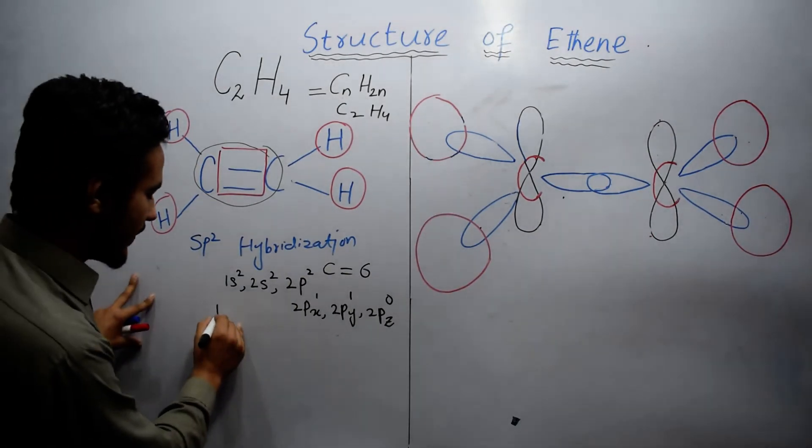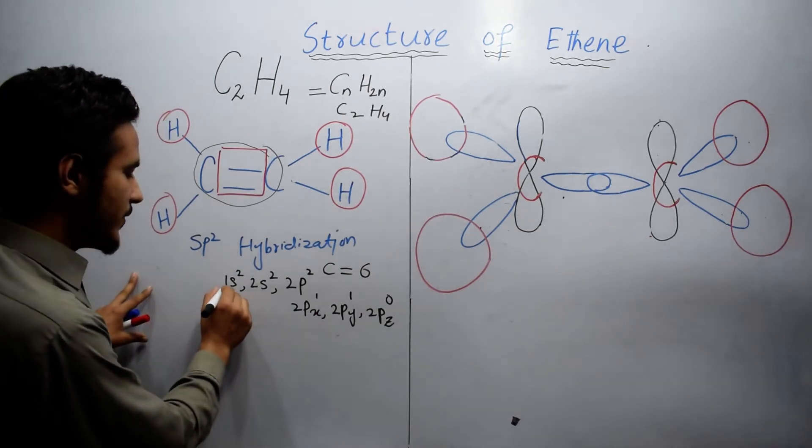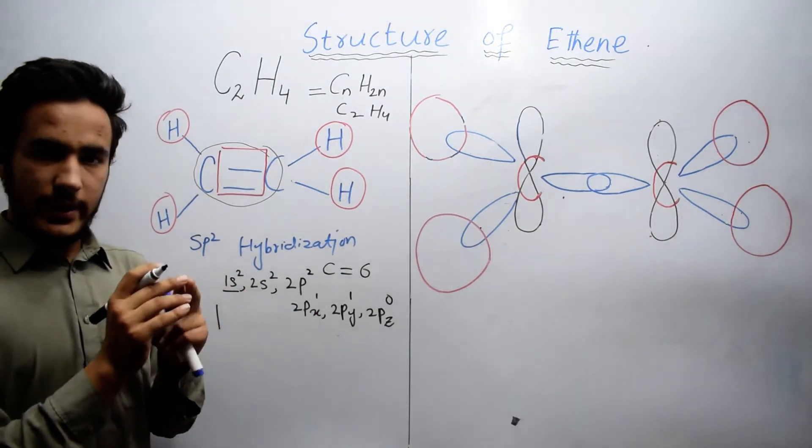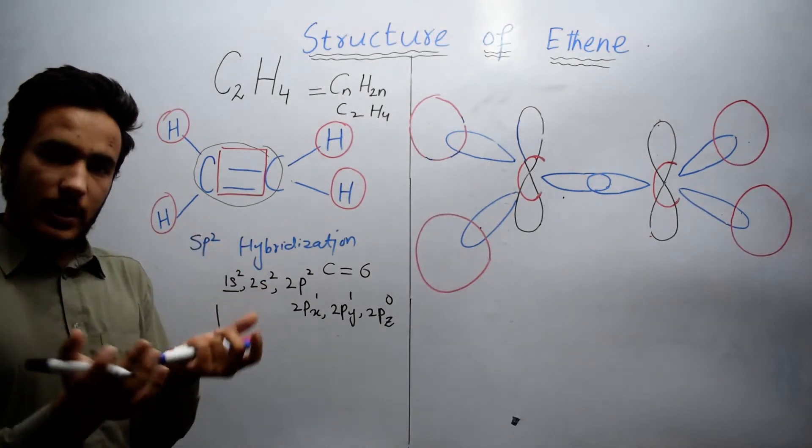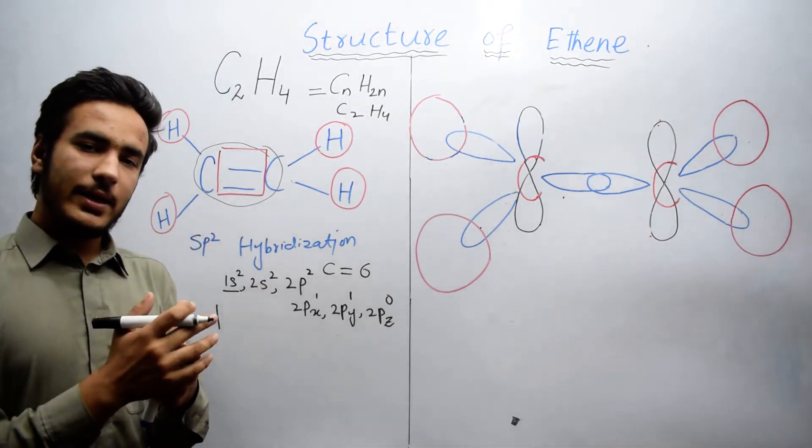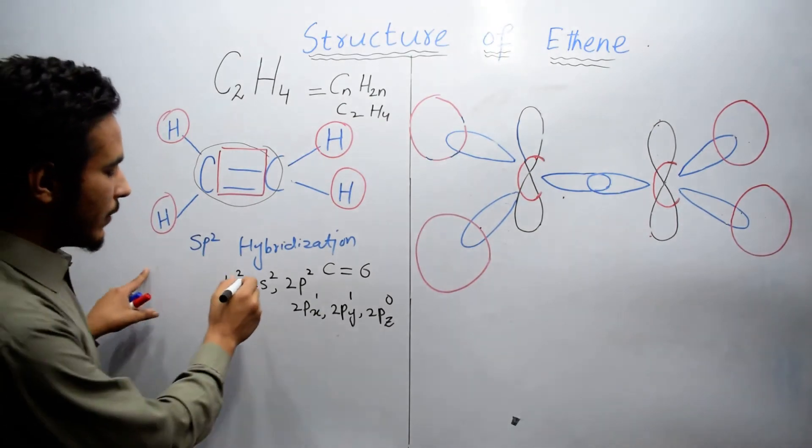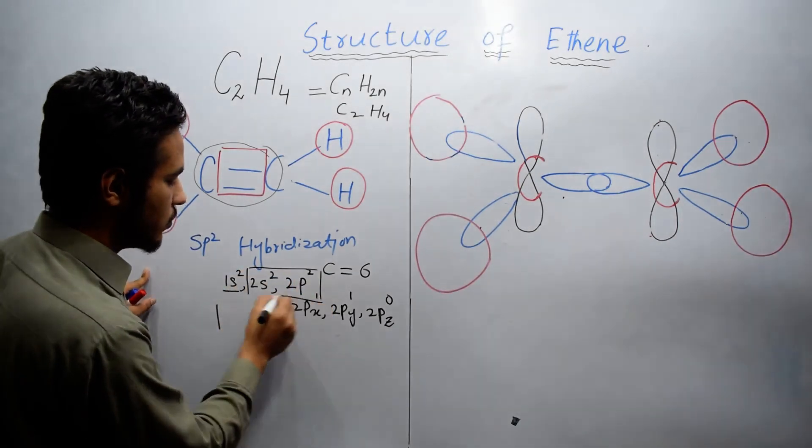In ground state, carbon exists in this form. As we know that 1s2 is core or shielded core orbital, it does not take part in chemical reaction. Now we will only deal with 2s2 and 2p2.